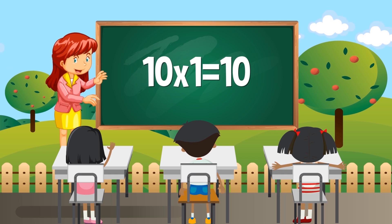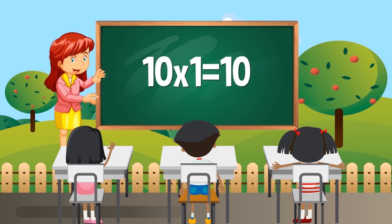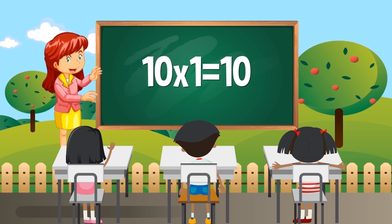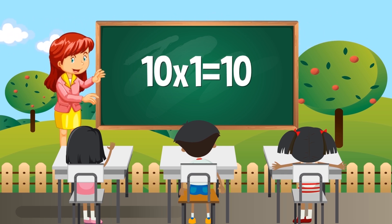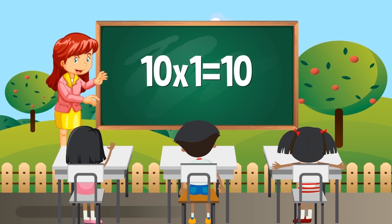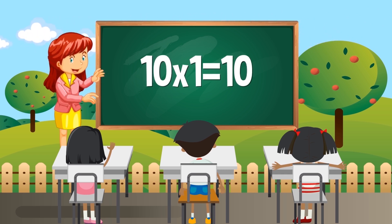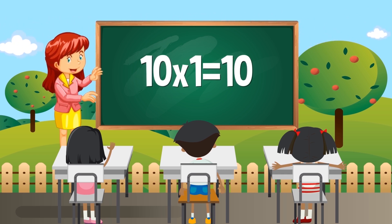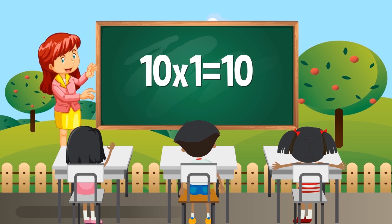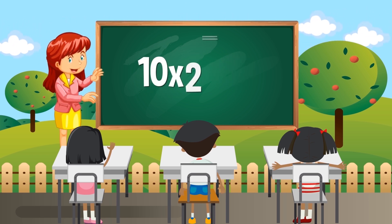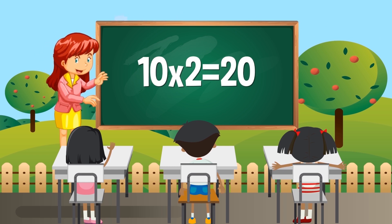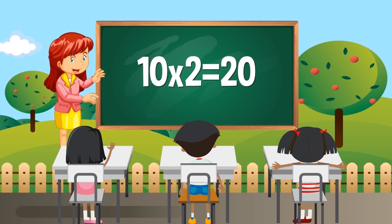Ten times one equals ten. Ten times two equals twenty.